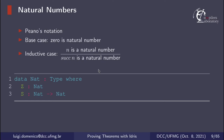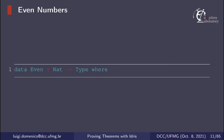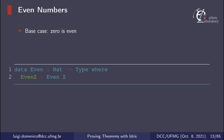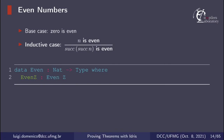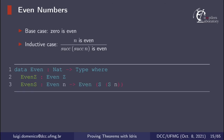Our first example will be about even numbers, so let's define what even numbers are. We have a data type Even that takes a natural number and returns a type — this is a dependent type because it depends on a value. The base case is 0 is even, so we have the constructor EvenZ. The inductive case is: if n is even then the successor of the successor of n is even, and for that we have the constructor EvenS, which takes Even n and returns Even (S (S n)).